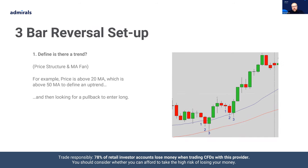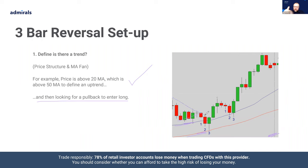Step one: define if there is a trend. We're using price structure and the moving average fan for that. For example, price is above the 20-period moving average, which is above the 50-period moving average, to define an uptrend. In this example, price is above the 20 — the blue — which is above the red 50, and the green 200 is way down here. Then what we're looking for is a pullback to enter the long trade. As price kind of pulls back towards the 20 and 50-period moving average, that is the first element we're looking for.